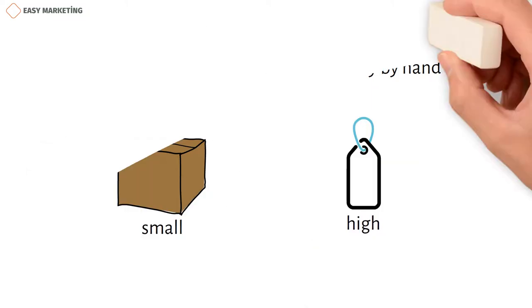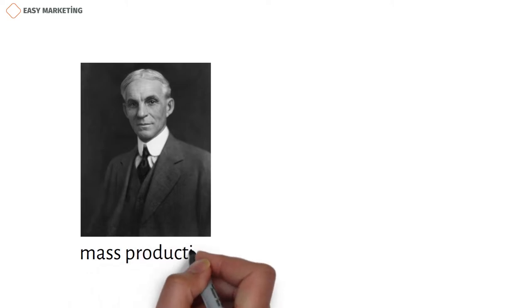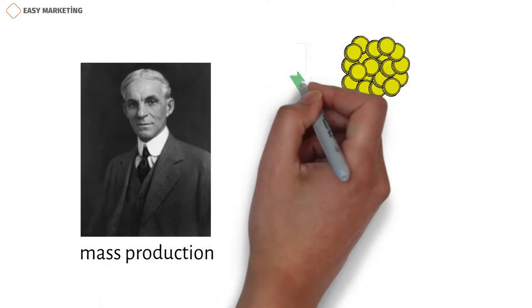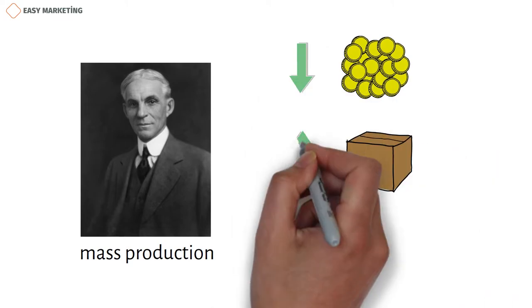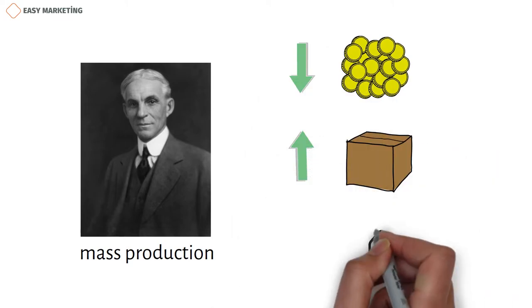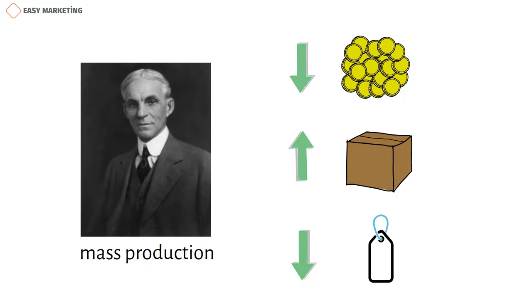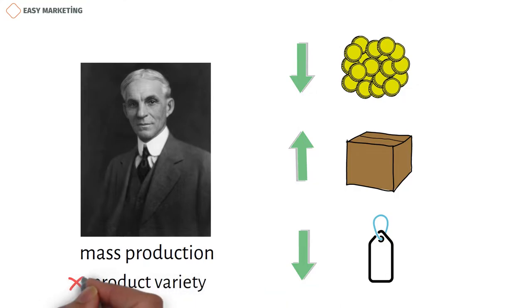Later, Henry Ford started mass production for the first time in the world with the help of various machines and mechanisms. In a mass production system, costs are reduced, production numbers are increased, and as a result, prices are lowered. But this time, there's no product variety.